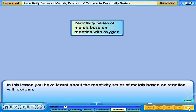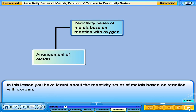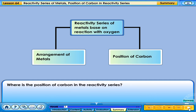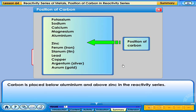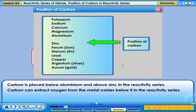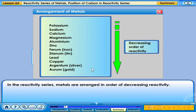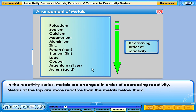In this lesson, you have learned about the reactivity series of metals based on reaction with oxygen. Carbon is placed below aluminum and above zinc in the reactivity series. Carbon can extract oxygen from the metal oxides below it in the reactivity series. Metals are arranged in order of decreasing reactivity, with metals at the top being more reactive than those below them.